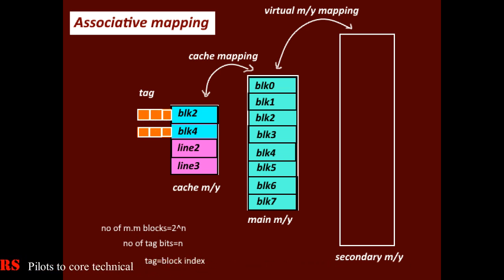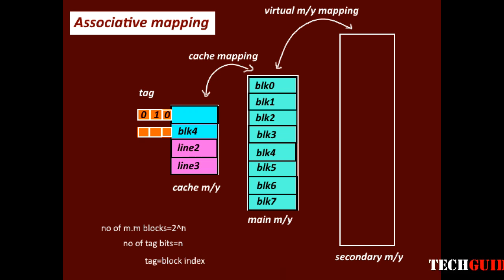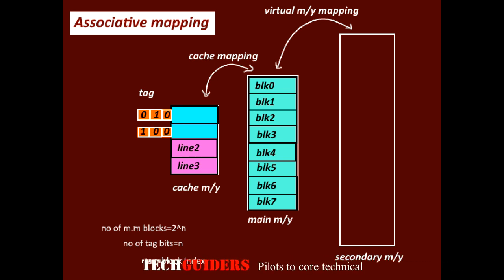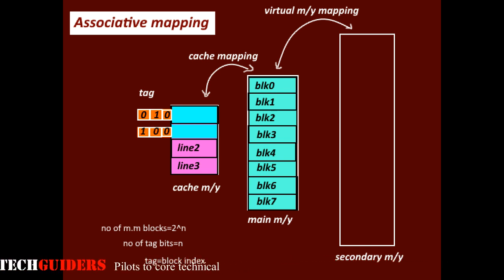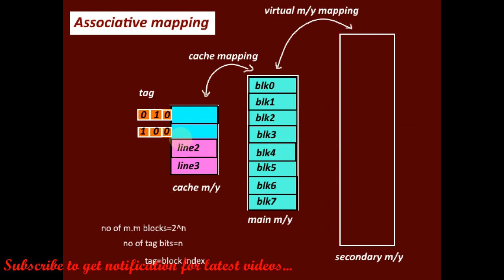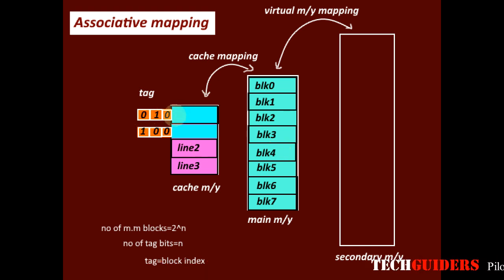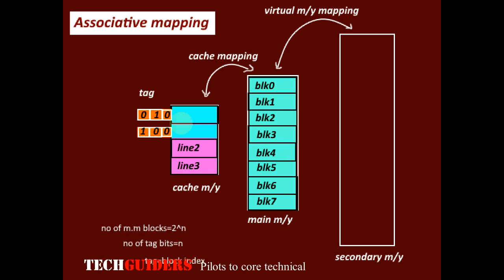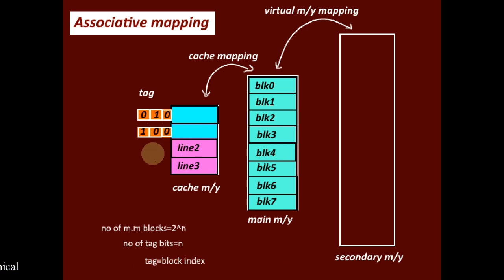In this example, line 0 is having main memory block 2, so the tag is 010. Line 1 is having main memory block 4, so the tag is 100. The other 2 lines are free. By analyzing the cache lines and their associated tags, we can identify which blocks are present and which lines are available.